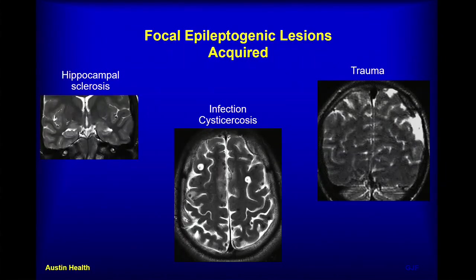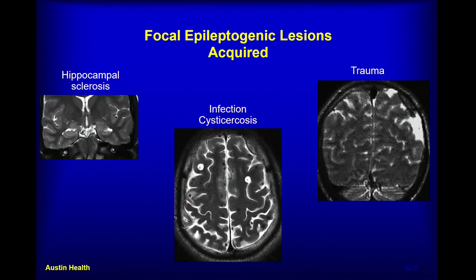Many acquired conditions can cause epilepsy as well. The most common cause of epilepsy worldwide is neurocysticercosis — a classic example shows multiple different stages of the disease: the vesicular stage with the scolex visible as a filling defect within the cyst, oedema around a dying cyst, and multiple low-signal foci representing calcified chronic neurocysticercosis. Post-traumatic injury may also be epileptogenic and serve as a surgical target.